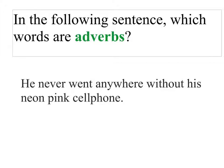And the last example: 'He never went anywhere without his neon pink cell phone.' Which words are the adverbs? What's the verb? He went — past tense. Now, using that, see if you can find the adverbs. If we ask the question when — he never went anywhere — never is an adverb; it answers when he went. Another question would be where he went: anywhere. So your adverbs are never and anywhere.